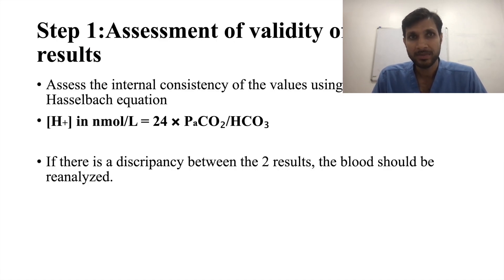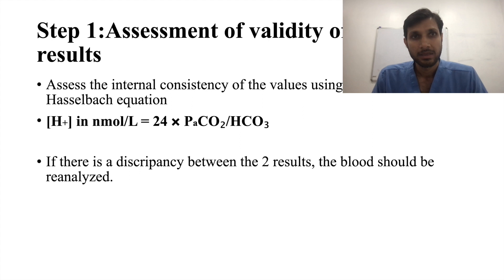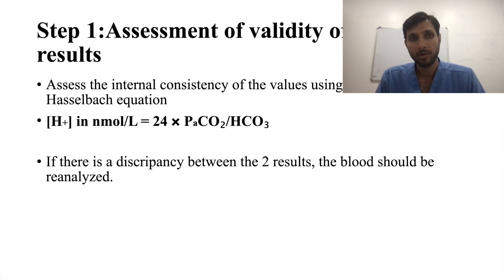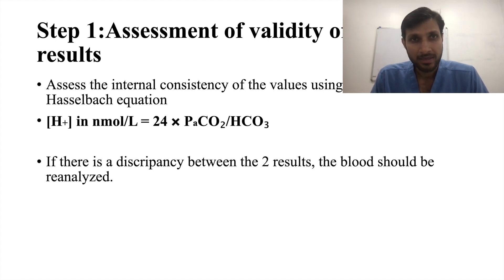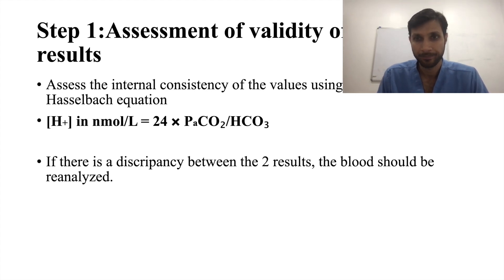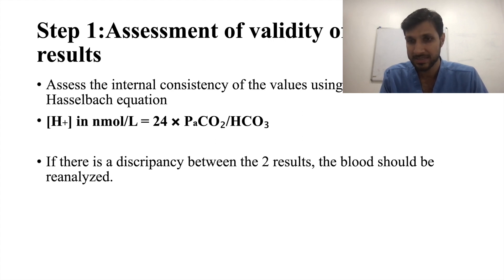Coming to the stepwise assessment of ABG, Step 1 is the assessment of the validity of the result. According to the Henderson-Hasselbalch equation, we should know the H+ level in the body. The formula is 24 × PaCO2 / bicarbonate. There is a table that correlates pH with H+ level. If the correlation is okay, it is a valid ABG; if there is discrepancy, you must repeat the ABG.